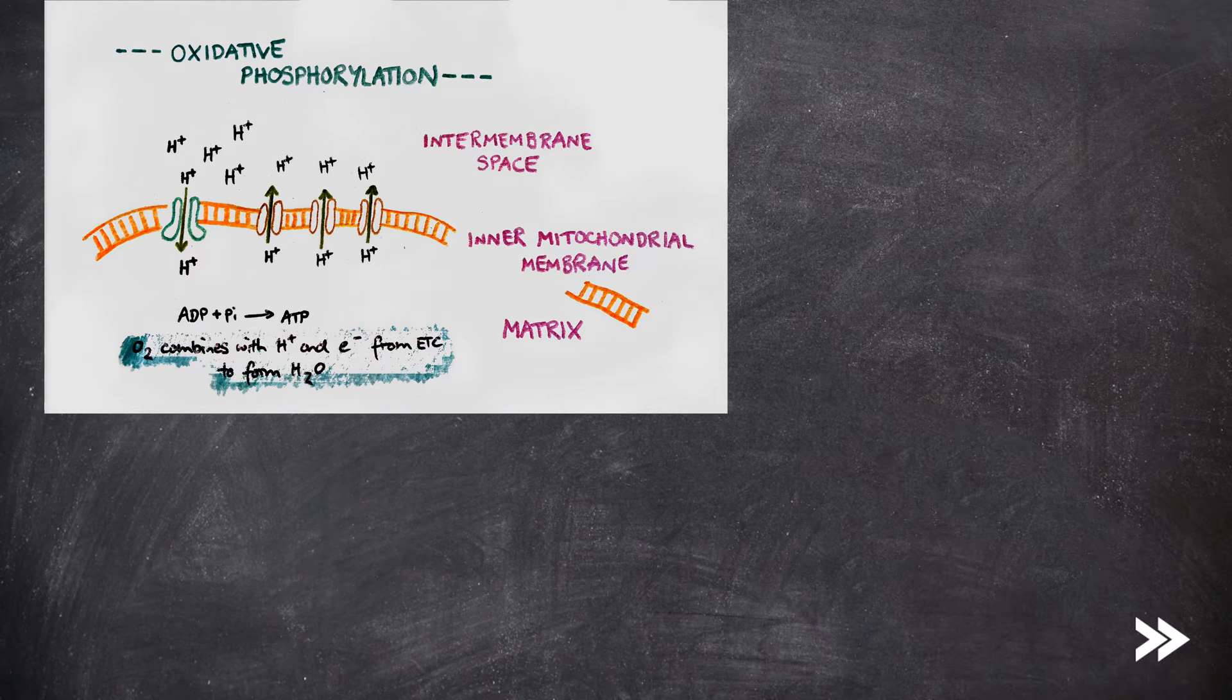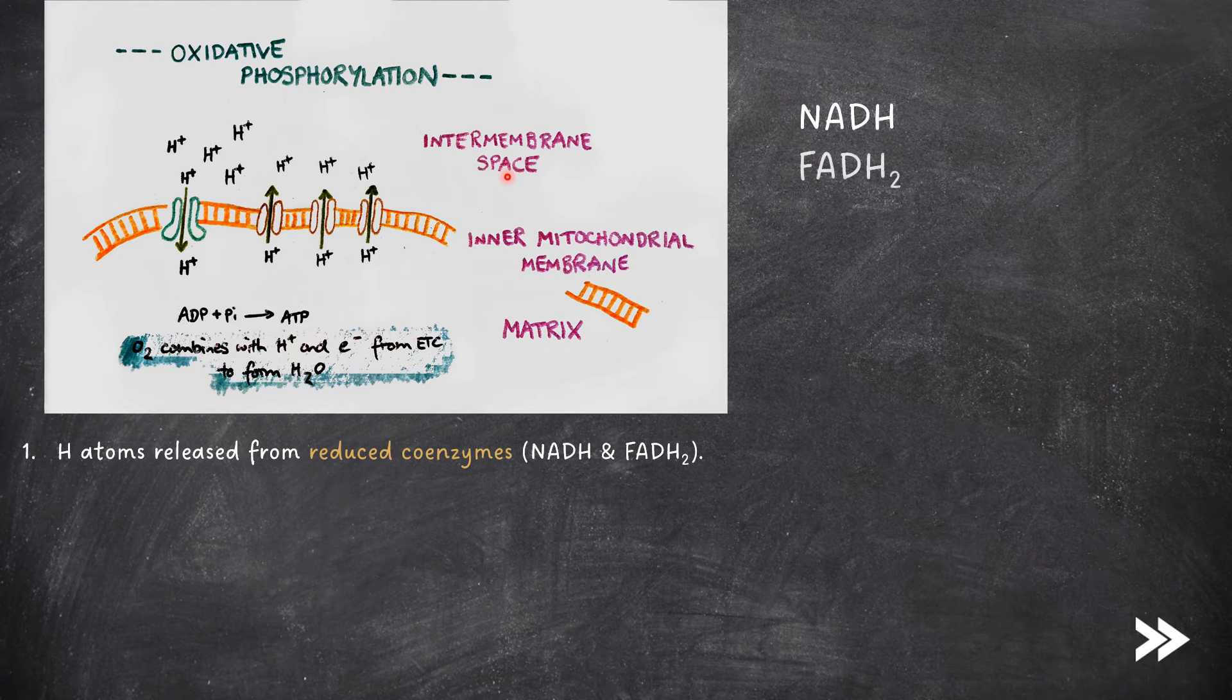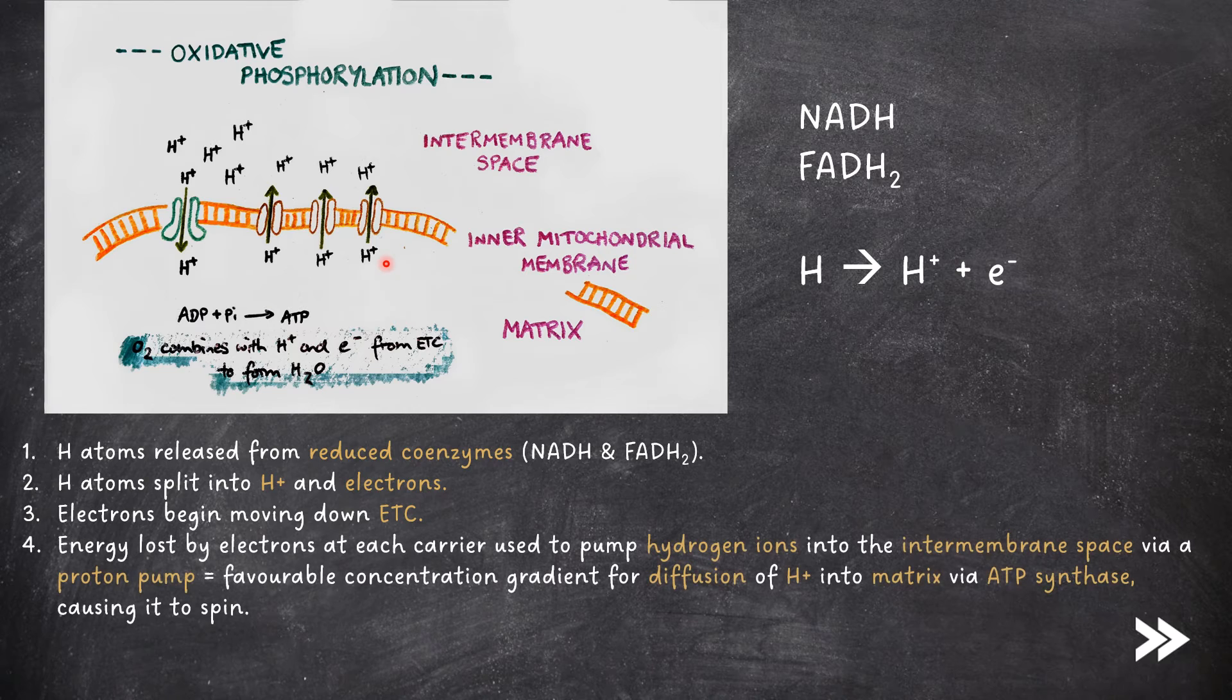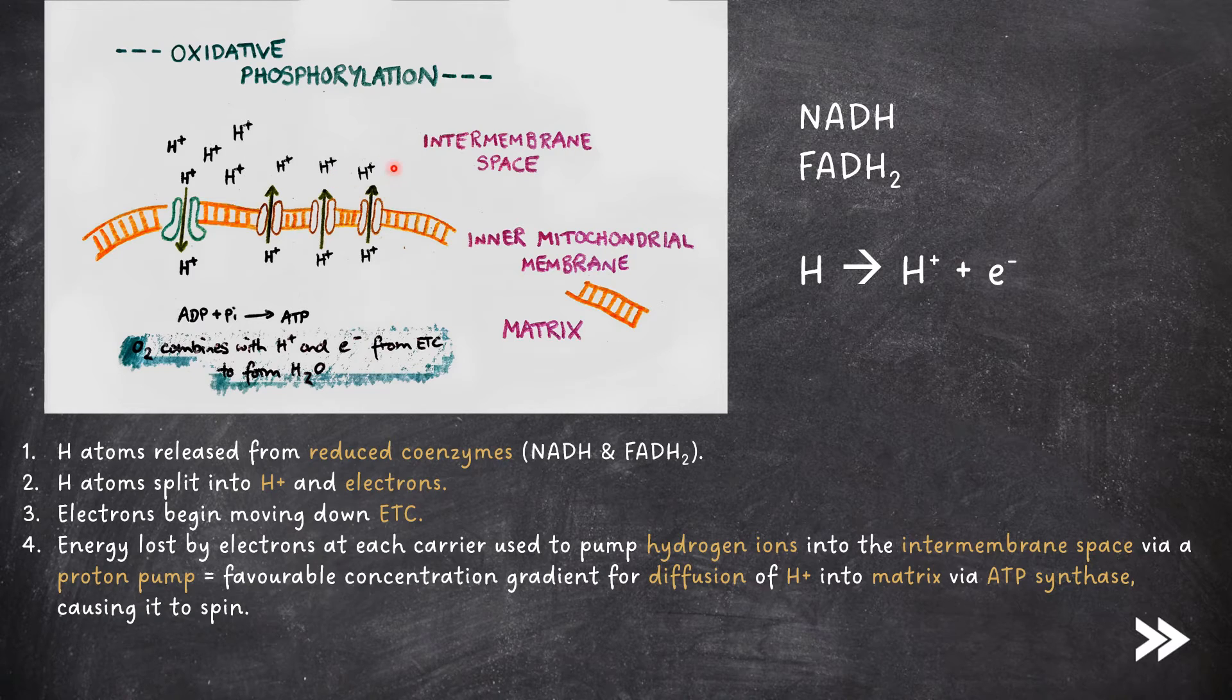The final stage in aerobic respiration is oxidative phosphorylation. This occurs at the inner mitochondrial membrane and the intermembrane space. First, hydrogen atoms are released from reduced coenzymes NADH and FADH2. The hydrogen atoms then split into hydrogen ions and electrons. The electrons begin moving down the electron transport chain. The energy lost by electrons at each carrier is used to pump hydrogen ions into the intermembrane space via a proton pump. This creates a favourable concentration gradient for the diffusion of hydrogen ions into the matrix via ATP synthase, causing it to spin.